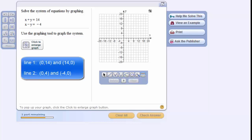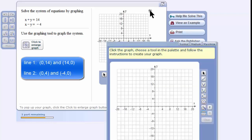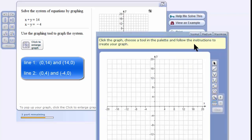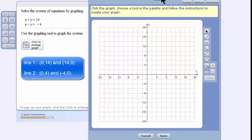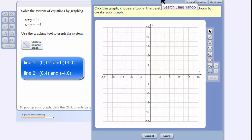So now we're back and we're going to graph the lines. We're going to do this by graphing two points for each line. The first thing I'm going to do is make the grid larger so that I can see it. That's better. Now I'm going to click on the line tool.